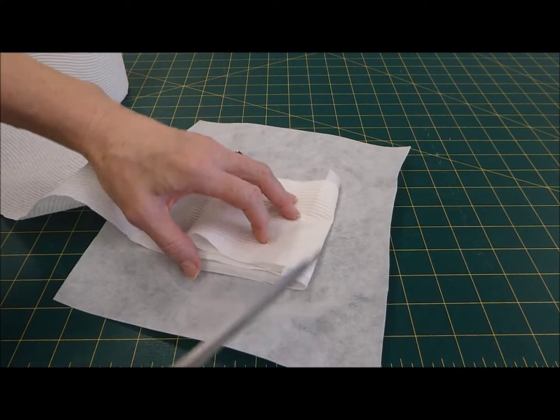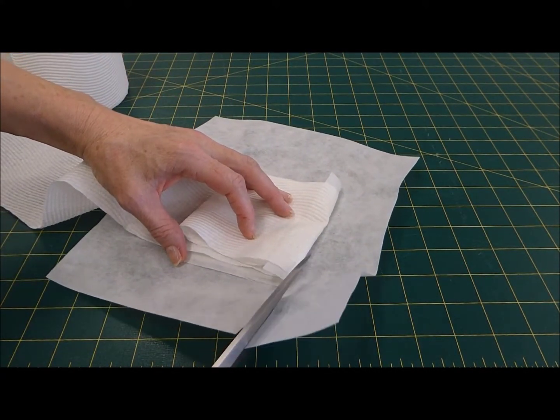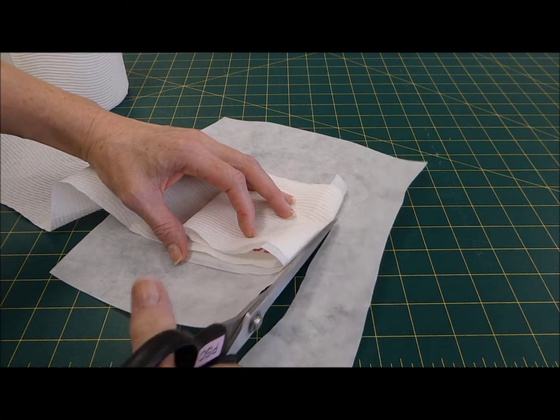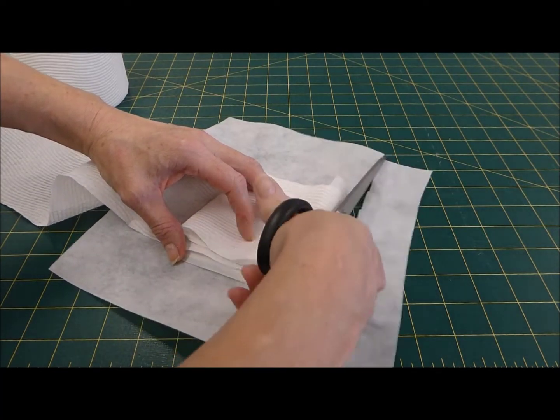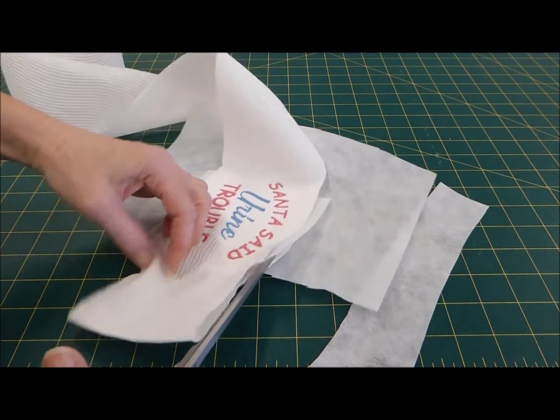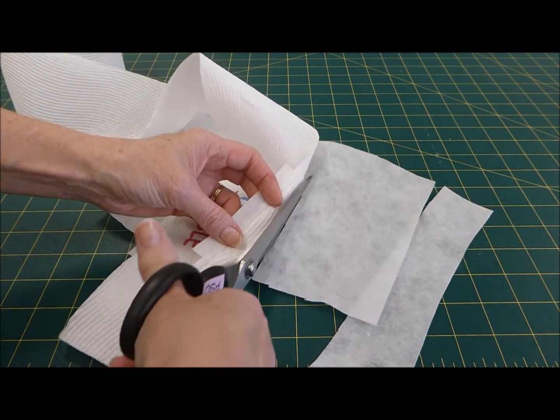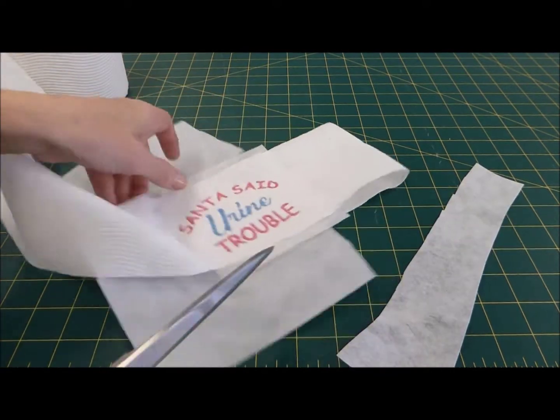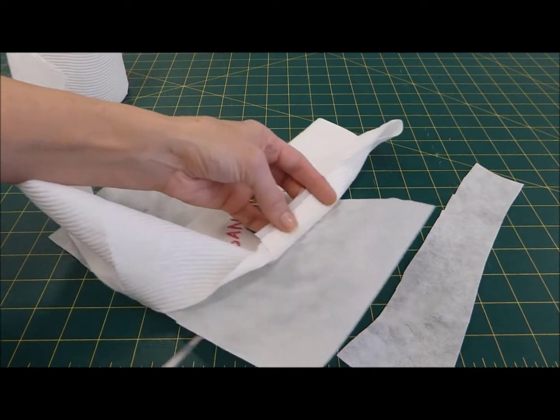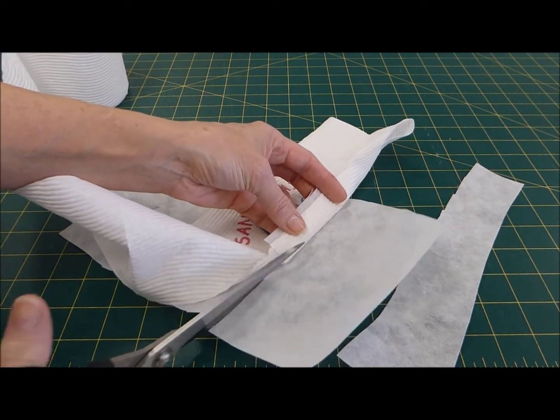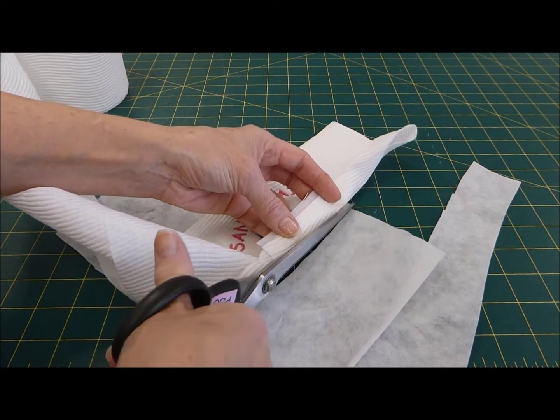Gently fold back the toilet paper and simply cut the excess cutaway back. Fold it back. So we're folding the toilet paper back to ensure that we don't cut the toilet paper and we're only cutting the cutaway.